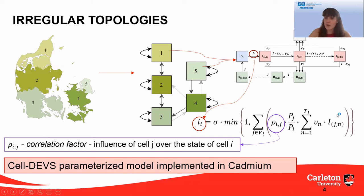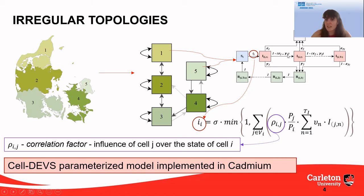So we take into account the number of infected people in that cell, the virulence of the virus, the ratio of the population, and this correlation factor. With everything defined, we have implemented this as a parameterized model in Cadmium. Why parameterized? Because this correlation factor, the population of every cell, the virulence, the mortality rate, and the recovery rate are all parameters of the model. Let's take a look at a case study to see how we can use this model and our methodology to study the spread of a disease.